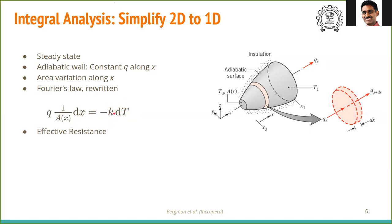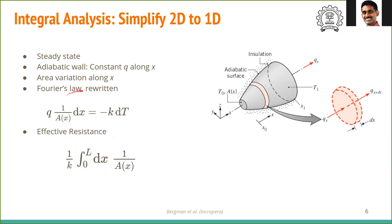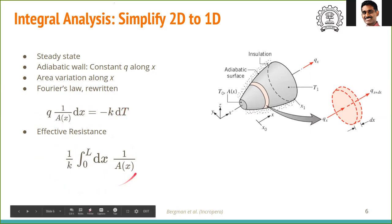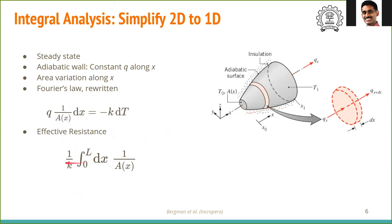Thermal conductivity may be a function of temperature, so it is kept with the dT term. Integrating, the effective resistance for a geometry with varying area and adiabatic walls is: R = (1/k)·∫₀ᴸ dx/A(x). This resistance times the heat flux equals the temperature difference.